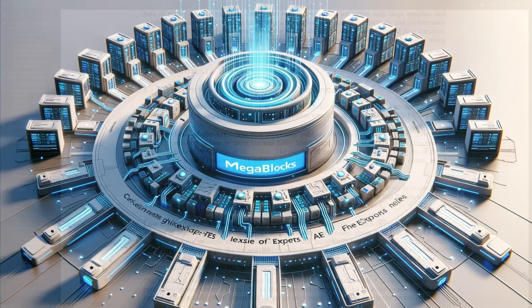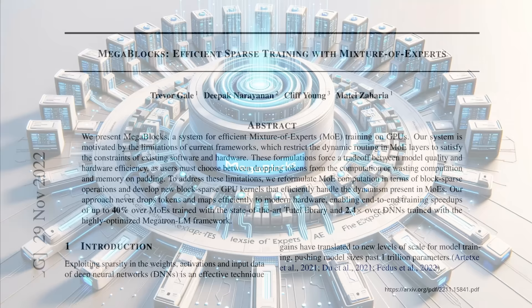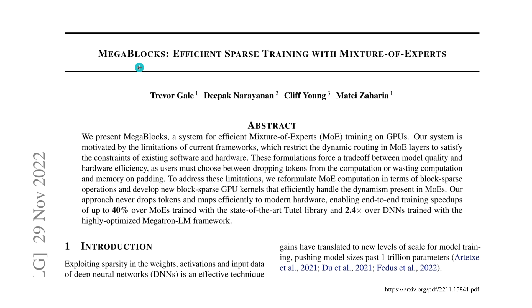Now we go to Megablocks — jumping to 2022. About a year ago, we had Megablocks: efficient sparse training within the mixture of expert system. What they did is address the limitations of the classical MoE system. They reformulated the computation in terms of block sparse mathematical operations and developed new block sparse GPU kernels for optimizing matrix multiplication of block sparse matrix and tensor structures. That is all there is to it.